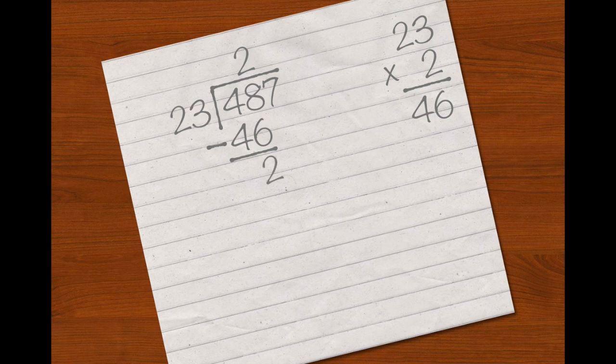Now you need to see how many times 23 goes into 2. Of course it won't so you bring the 7 down to make 27. Sometimes you add this arrow to make sure that your working out is clear.